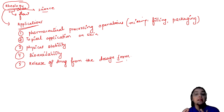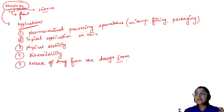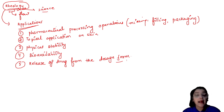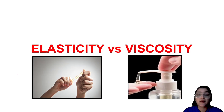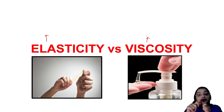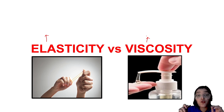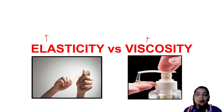Before understanding what actually happens, we need to know two terms: elasticity and viscosity. Though interconvertible in some contexts, they are very different from each other. As shown in the image, elasticity involves deformation from an original state — but when the force causing the deformation is withdrawn, the material gets back to its original state.